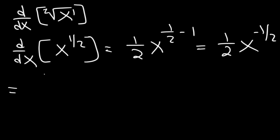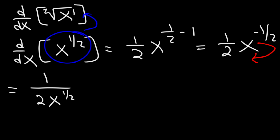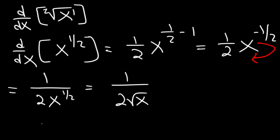Whenever you have a negative exponent, you need to move the variable to the bottom of the fraction. So we put x in the denominator, and the exponent changes from negative 1 half to positive 1 half. Recall that x to the 1 half is the same as the square root of x. So we can replace x to the 1 half with the square root of x, and so this is the first derivative of the square root of x function.